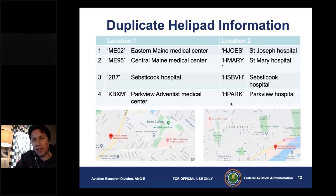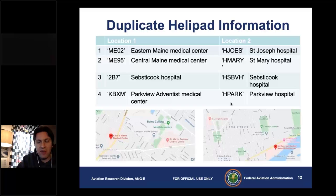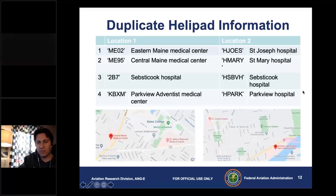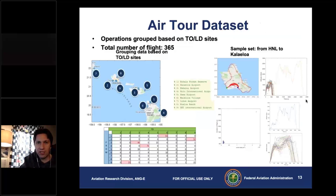Another issue we've hit is duplicate helipads. We worked with Dave and Joshua, who were kind enough to provide some of the files they're dealing with. Some of these locations are labeled one way in the 5010 or certain location data, but labeled something else in another system. So we're being cognizant of that so we're not over-counting or overfitting.